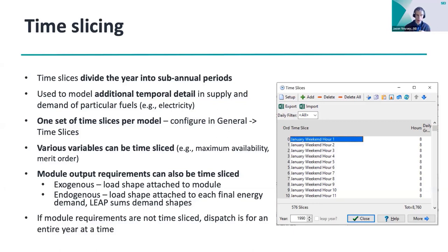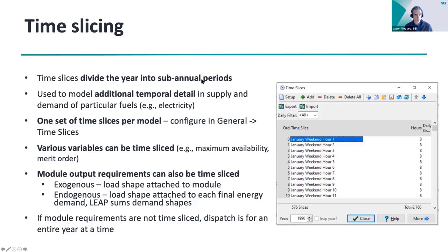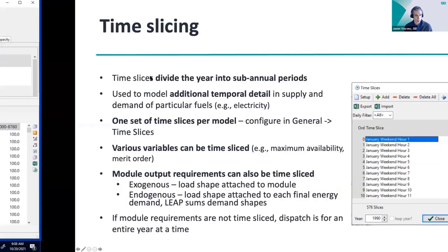If you attach load shapes to demands on the demand side, LEAP sums the profiles of all demands using that fuel to arrive at a system-wide load profile, which the supply module then responds to. Alternatively, the exogenous option lets you define an overall load shape assigned directly to the module, representing the average load shape in the power system. LEAP then spreads total demand-side electricity requirements across the year according to that shape.